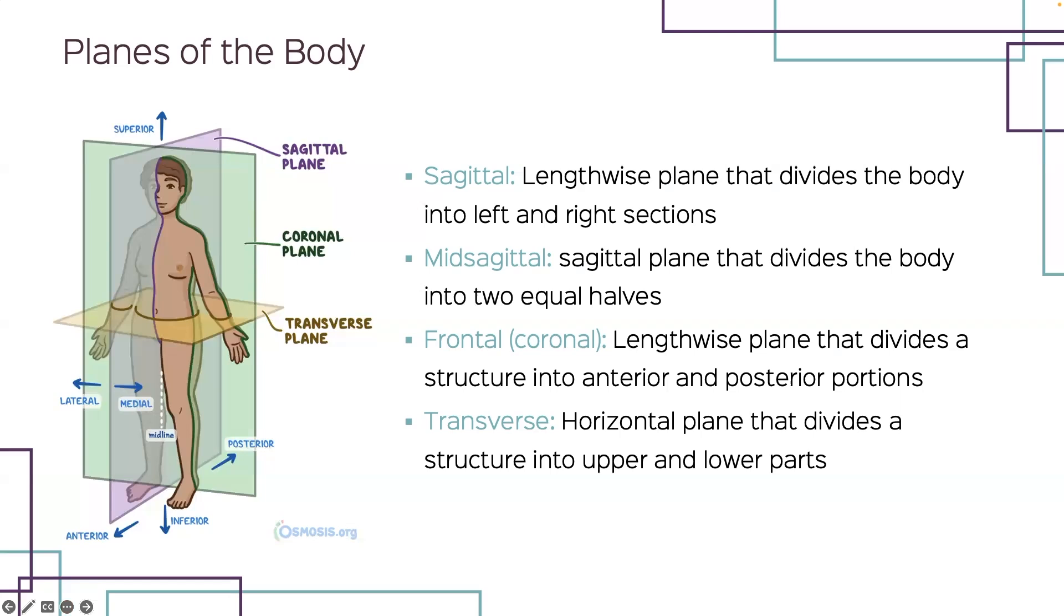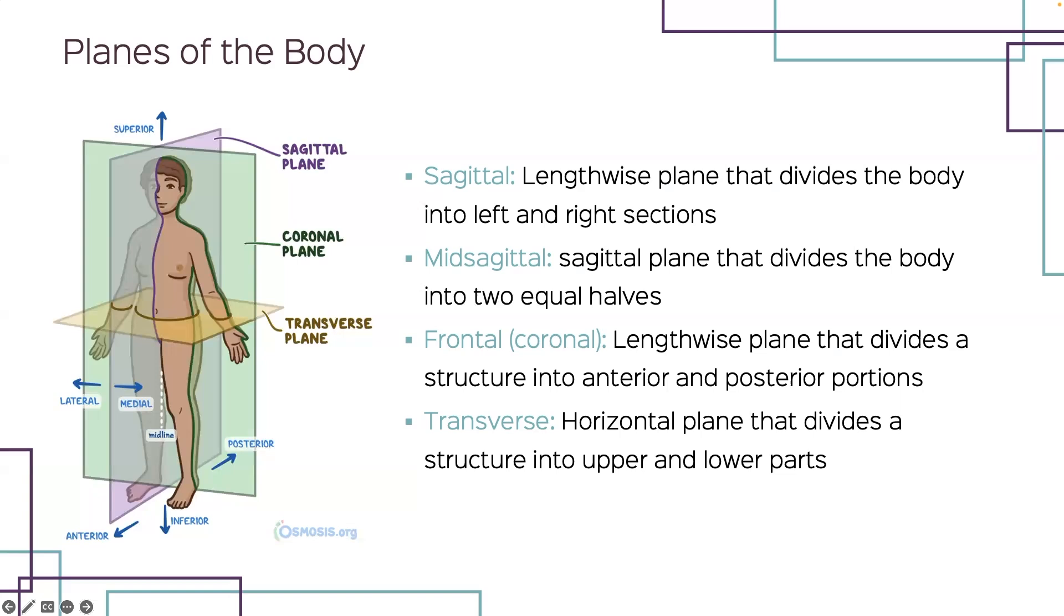Lastly, you have your transverse plane, which is a horizontal plane that gives upper and lower portions. Typically it will be right at that navel area, giving you your upper portion above the navel and then below your legs and your hips. But that one can pretty much run anywhere, especially when you're having those CTs and MRIs.